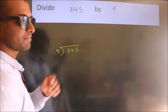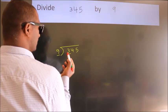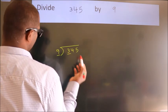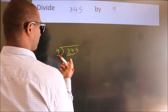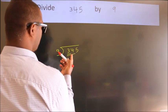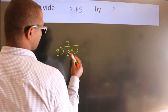Next, here we have 3, here 9. 3 is smaller than 9, so we should take two numbers, 34. A number close to 34 in 9 table is 9 threes, 27.